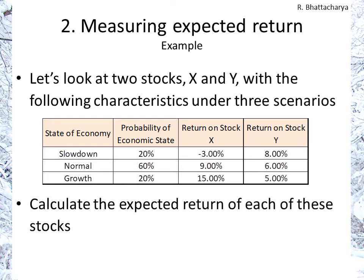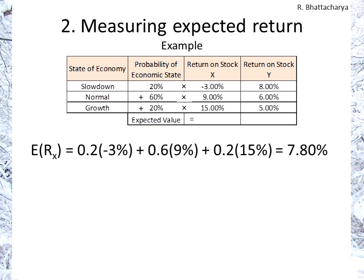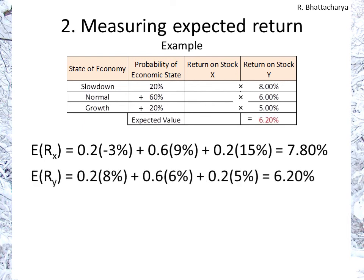How do we calculate the expected return of these stocks? It's the summation: 20% × (−3%) + 60% × 9% + 20% × 15%, which gives us 7.8% for Stock X. For Stock Y, we multiply the probabilities of 20%, 60%, and 20% by the returns of 8%, 6%, and 5% respectively, giving us an expected return of 6.2%.